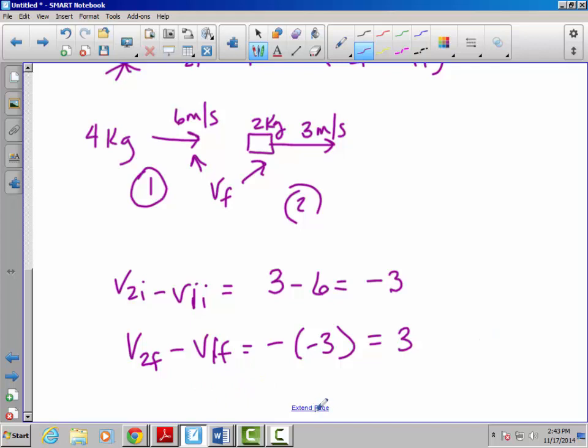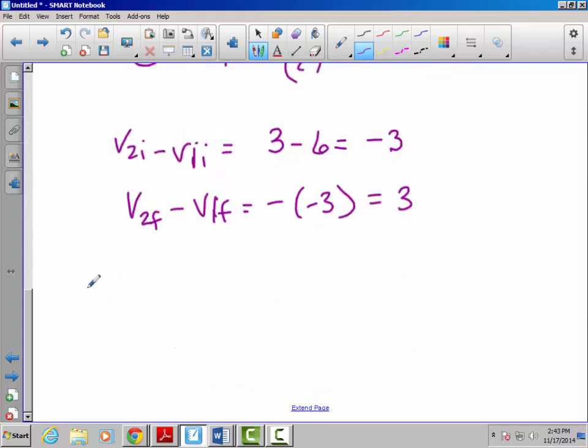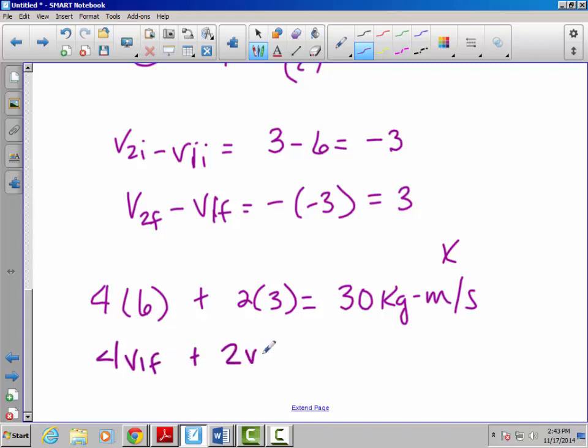So how does that help us? Well, we know that initially we have a certain amount of momentum, and our momentum is going to be 4 times 6 plus 2 times 3, which in this case will be 30. And we know conservation of momentum principles that after these two blocks collide, 4V1f plus 2V2f has to equal 30 as well.